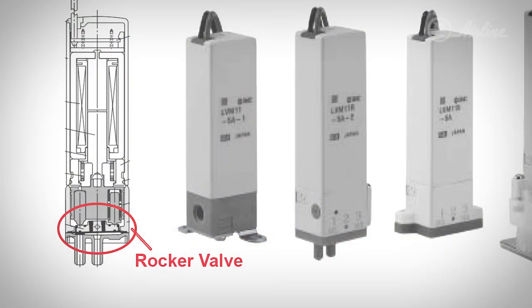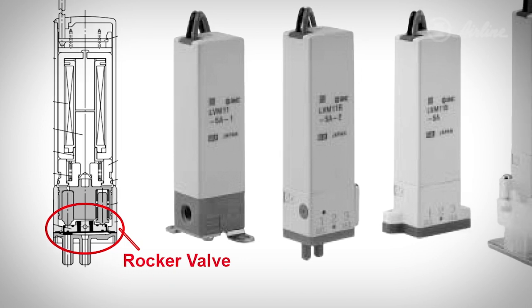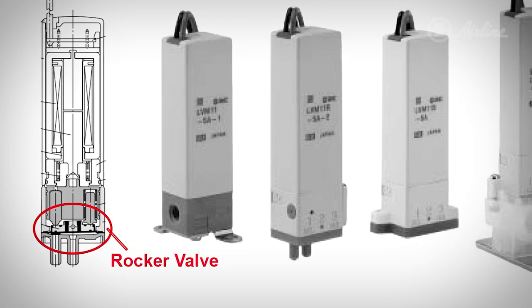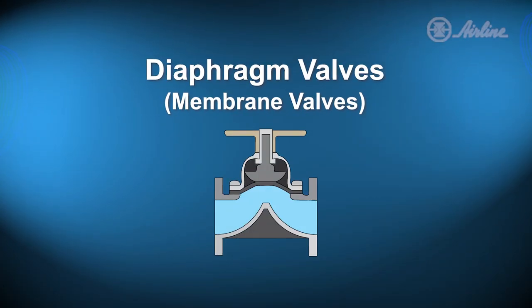Rocker valves have a compact size, are usually a lot smaller than diaphragm valves, and have a low internal volume with fast actuation times. On the other hand, rocker valves are not as well swept as diaphragm valves, so they typically carry more dead volume — meaning media can remain within the valve after use. Rocker valves also cannot sustain corrosive chemicals, which gives them a shorter lifespan. In those cases, you could turn to diaphragm valves.